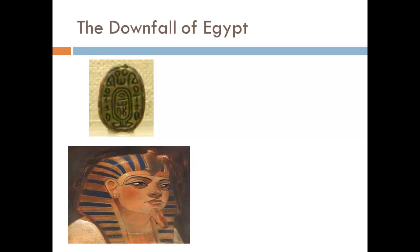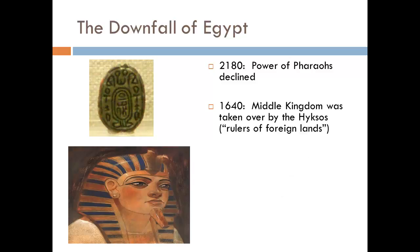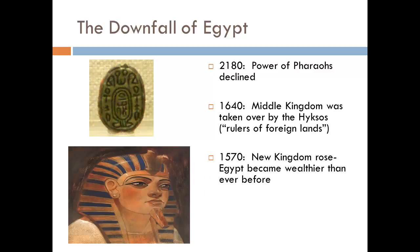Egypt eventually fell. In 2180 BC the power of the pharaohs began to decline, and when the pharaohs lost power people started to lose faith in the government, which allowed invaders to come in. There was a period between the Old Kingdom and the Middle Kingdom where foreign groups ruled over what was once ancient Egypt. Eventually the Middle Kingdom took over again, but by 1640 BC they were taken over by a group called the Hyksos — meaning 'rulers of the foreign lands' — who used horses and bronze tools, introducing those tools to the Egyptians. By 1570 BC, a new kingdom arose and took over the Hyksos, creating a new Egypt.